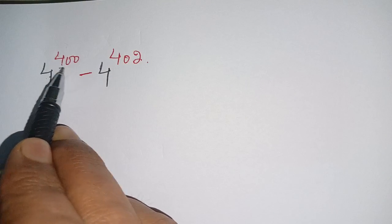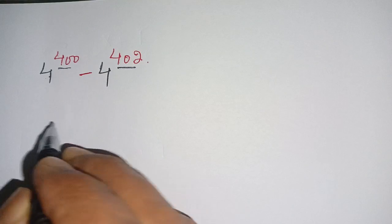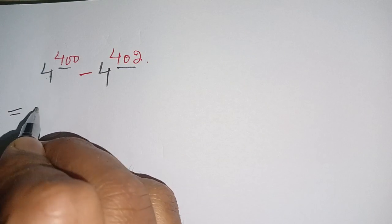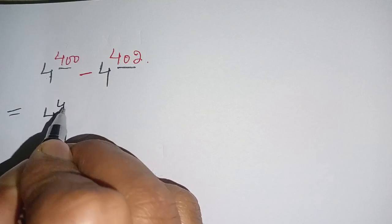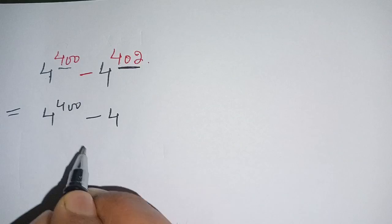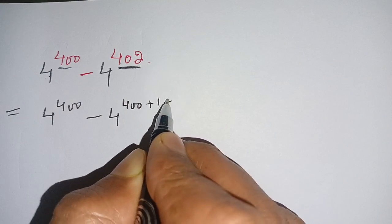How to solve 4 power 400 minus 4 power 402 in simplest form. We write this as 4 power 400 minus 4 power 402, which can be written as 400 plus 1 plus 1.